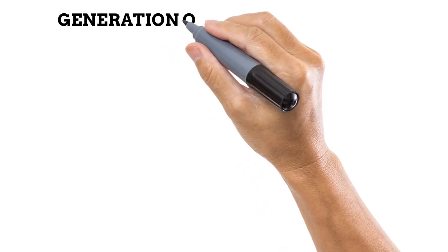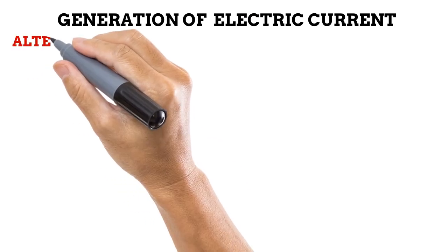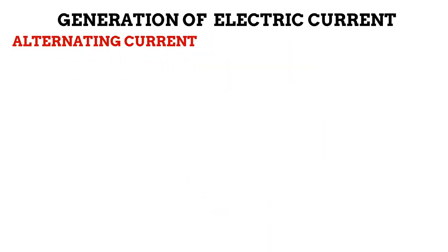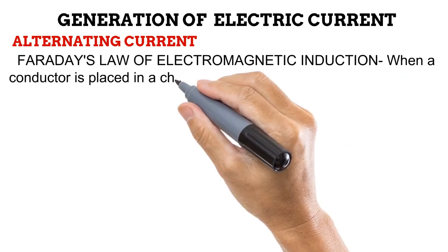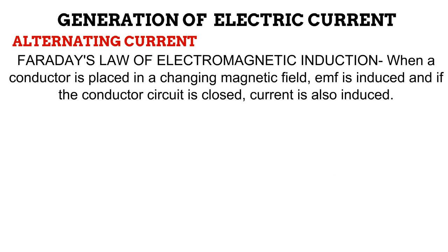So how exactly do we generate electricity? At this point, I should point out that electricity is usually generated as an alternating current. To obtain direct current, the steps in producing alternating current are modified. Generation of electricity is based on Faraday's first law of electromagnetic induction, which states that when a conductor is placed in a changing magnetic field, an electromotive force is induced, and if the conductor circuit is closed, current is also induced.